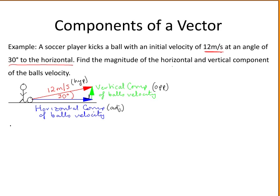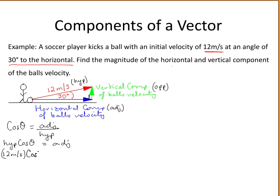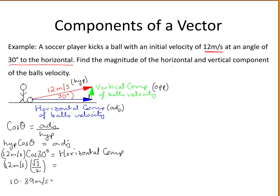Solving for the horizontal component: the cosine of an angle is the adjacent over the hypotenuse. Multiplying both sides by the hypotenuse gives us the horizontal component equals the hypotenuse times cosine of the angle. Filling in from our picture, the hypotenuse is 12 meters per second and our angle is 30 degrees. The cosine of 30 degrees is root 3 over 2, giving a horizontal component of 10.39 meters per second.